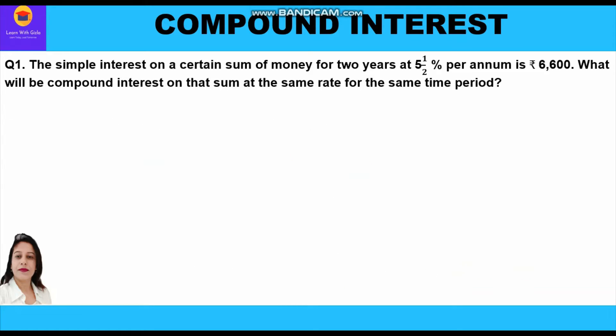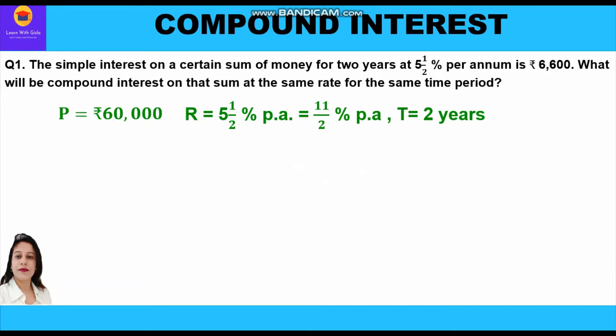Now that we have the principal of rupees 60,000, we calculate compound interest at the same rate of 11/2% per annum and for the same time period of two years. We apply the formula: CI = P × [(1 + R/100)^n − 1].